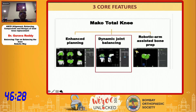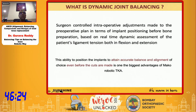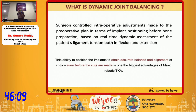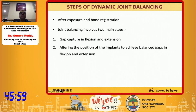Dynamic joint balancing is the feature which is very unique to robotics. It means surgeon-controlled intraoperative adjustments made to the preoperative plan in terms of implant positioning before bone preparation, based on real-time dynamic assessment of the patient's ligament tension in both flexion and extension. In other words, you are attaining accurate balance and alignment of choice even before the cuts are made. Unlike navigation or conventional approaches where you cut and then recheck.